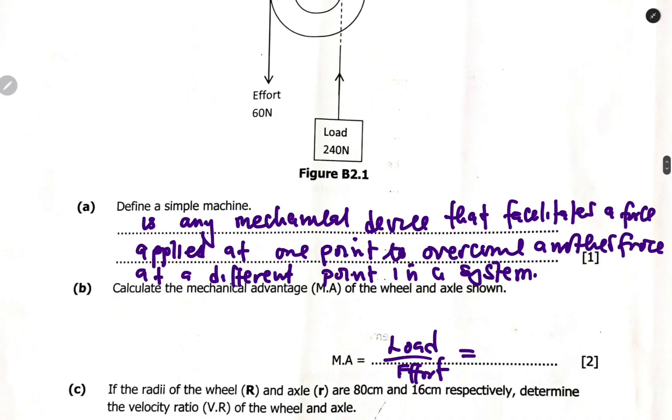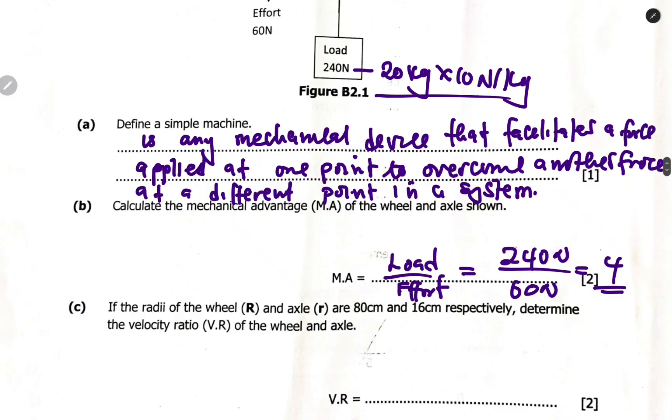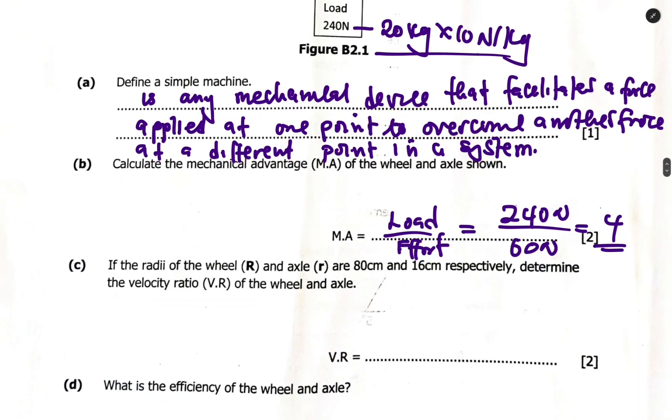If this one was 20 kg, you multiply it by 10 to convert it into weight, 10 newton per kg. Don't forget these are forces. Mechanical advantage is load over effort. In this case, 240 newton divided by 60 newton gives you 4. Mechanical advantage does not have units. It's just a ratio of load to effort.